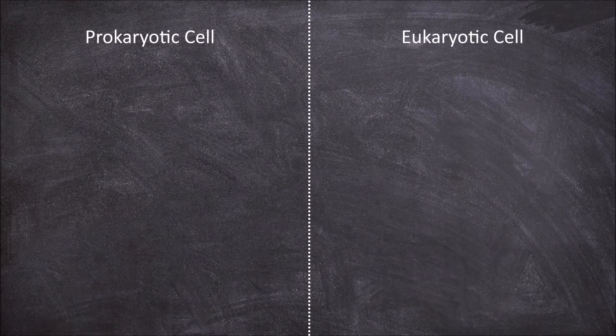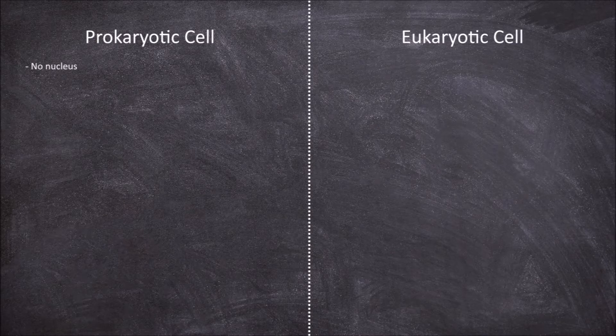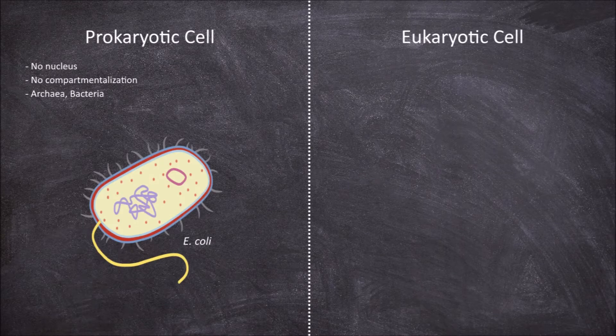In this video we're going to look at the differences and similarities between prokaryotic cells and eukaryotic cells. Prokaryotes are organisms that do not possess a nucleus. They have a simple cell structure that lacks compartmentalization. Prokaryotes include members of the two domains archaea and bacteria. E. coli is an example of a prokaryotic cell that we will use for the comparison between a prokaryotic cell and a eukaryotic cell.